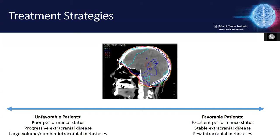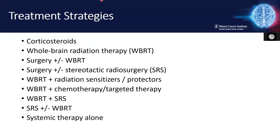Robert noted that immunotherapy was conspicuously missing from the slide. In systemic therapy alone, traditionally cytotoxic chemotherapy was not used given poor intracranial penetration. When we think about systemic therapy, that really means immunotherapy or targeted therapy — for example, for ALK-rearranged non-small cell lung cancer, EGFR-mutated disease, or BRAF-altered melanoma brain metastases. A large proportion of those systemic therapy patients are immunotherapy patients.